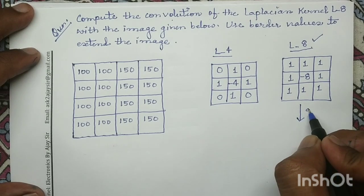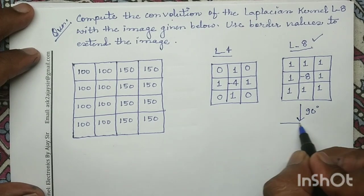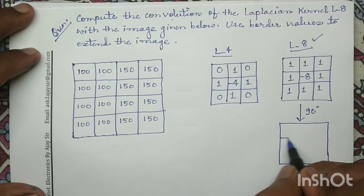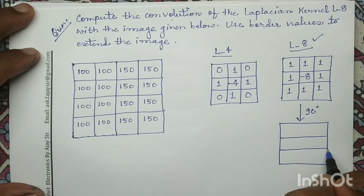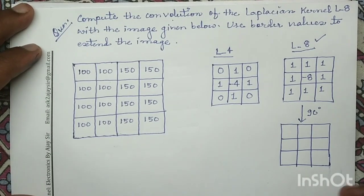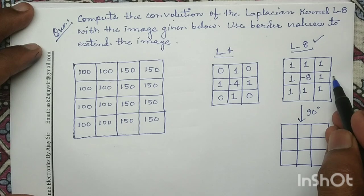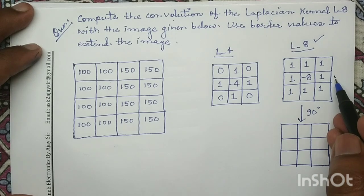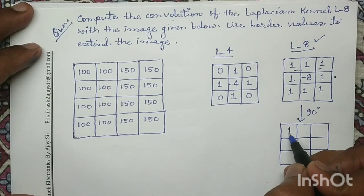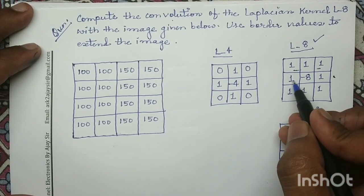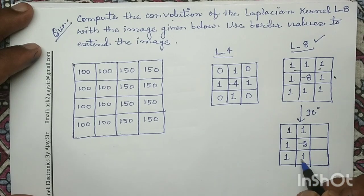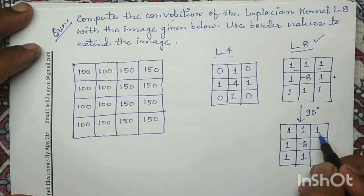In the first step, we will rotate the mask by 90 degrees in the anti-clockwise direction. In order to rotate the original L8 mask by 90 degrees, the first row becomes the first column, the second row becomes the second column, and the third row becomes the third column.